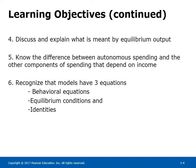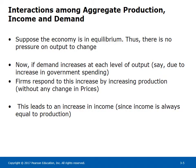Learning Objective 4: Discuss and explain what is meant by equilibrium output. Learning Objective 5: Know the difference between autonomous spending and the other components of spending that depend on income. Learning Objective 6: Recognize that models have three equations — behavioral equations, equilibrium conditions, and identities. Learning Objective 7: Interactions among aggregate production, income, and demand.